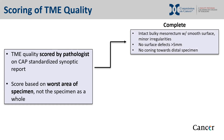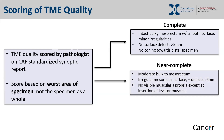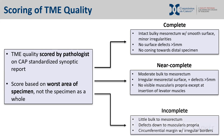Complete TME is defined as an intact mesorectum with a smooth surface containing only minor irregularities. The specimen must have no surface defects greater than five millimeters and no coning of the specimen towards the distal margin at the levator complex. Near complete TME is defined as moderate bulk of the mesorectum with minor irregularities to the mesorectal surface, some greater than five millimeters, but not down to the muscularis propria. Incomplete TME contains little to no bulk of the mesorectum with full thickness defects down to the muscularis propria, and the circumferential margin may also have irregular borders.